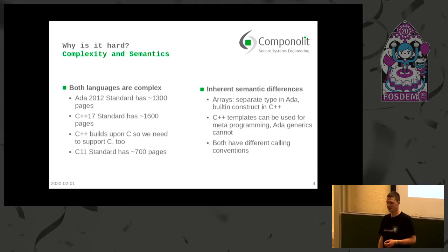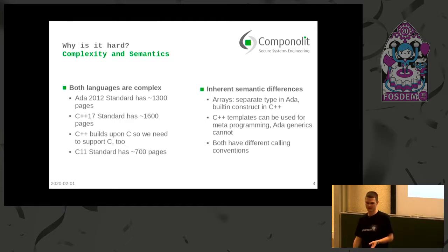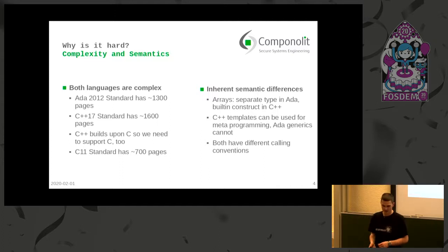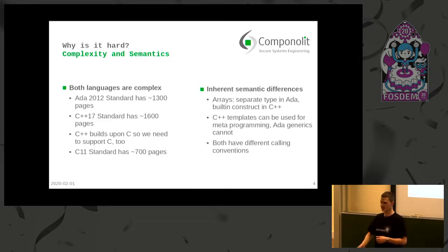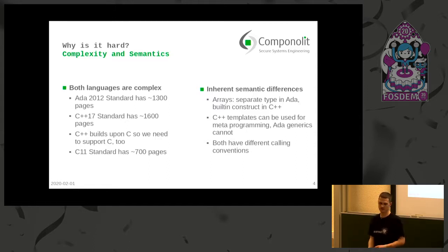So why is it hard? Both are quite complex languages: Ada 2012 has 1,300 pages and C and C++ together have around 2,000 pages of standard. To make a complete generator you have to understand it all and map it one onto the other. At some points they are also inherently different — C++ templates can be used for metaprogramming, they're actually Turing complete, while Ada generics are not that versatile. Also, arrays in Ada are a separate type with a specific index type, whereas in C++ the array is a built-in construct and the index is just a constant expression cast to whatever type is needed at compile time.